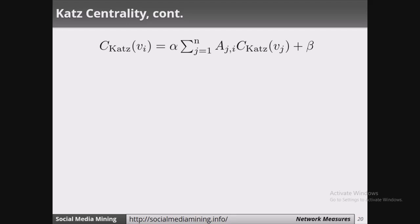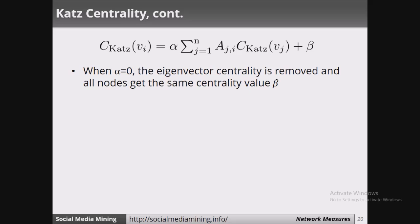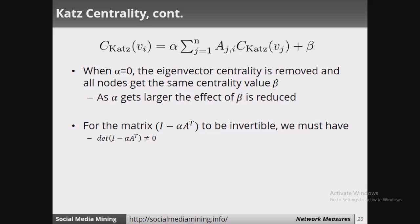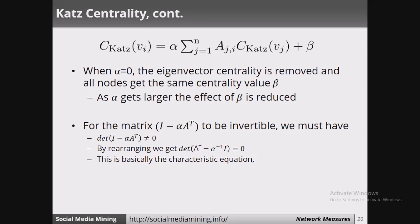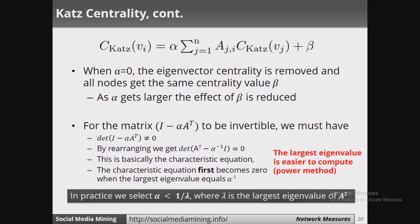When alpha is 0, the eigenvector centrality term is removed and all neighbors get the same centrality value beta. As alpha gets larger, the effect of beta is reduced. In practice we select alpha such that alpha is less than 1 over the largest eigenvalue of the adjacency matrix.